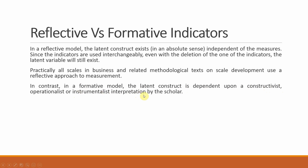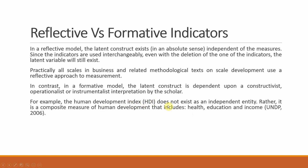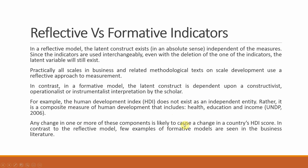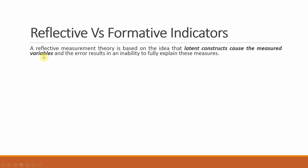In contrast, in a formative model the latent construct is dependent upon the constructivist or operationalist interpretation of the scholar. For example, the Human Development Index (HDI) does not exist as an independent entity — it is composed of three components: health, education, and income. If you remove even one of them, you no longer have the Human Development Index. HDI is therefore a formative construct, and any change in one or more of these components is likely to cause a change in the HDI score.